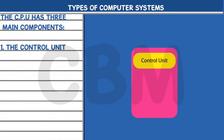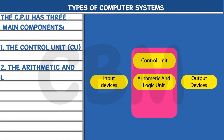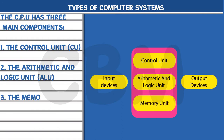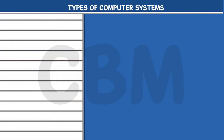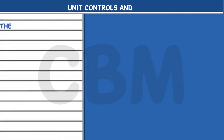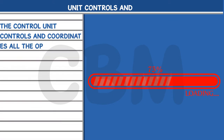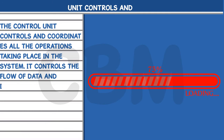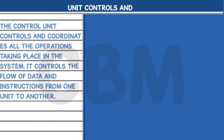1. The Control Unit (CU). 2. The Arithmetic and Logic Unit (ALU). 3. The Memory Unit (MU). The Control Unit controls and coordinates all the operations taking place in the system. It controls the flow of data and instructions from one unit to another.